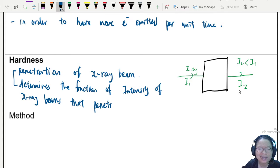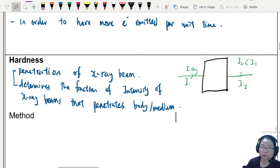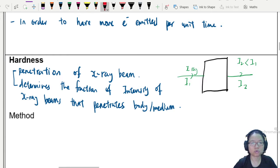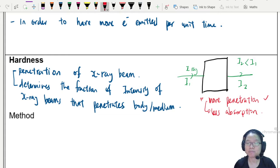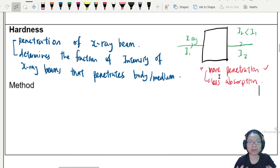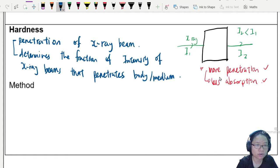We want hard X-ray because we want the I2 to be still big enough for us to measure or record on the photographic plate. If there is more penetration, which is generally what we want, this means less absorption. The body absorbs less, which means there are less harmful X-rays being absorbed by the body. This is what we want: more penetration, less absorption.